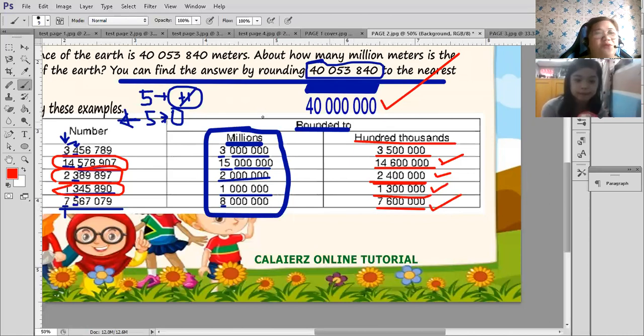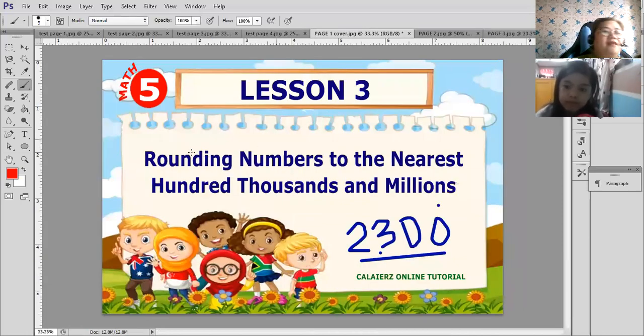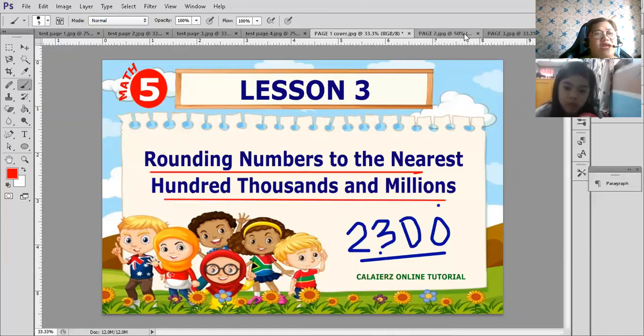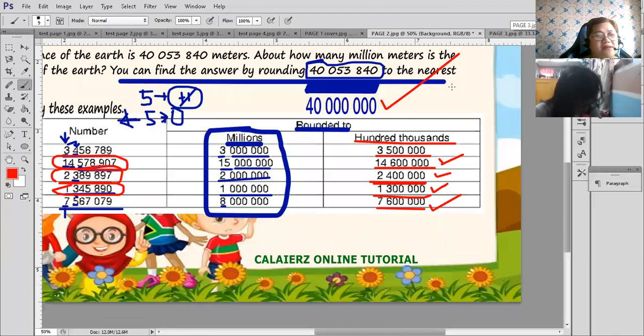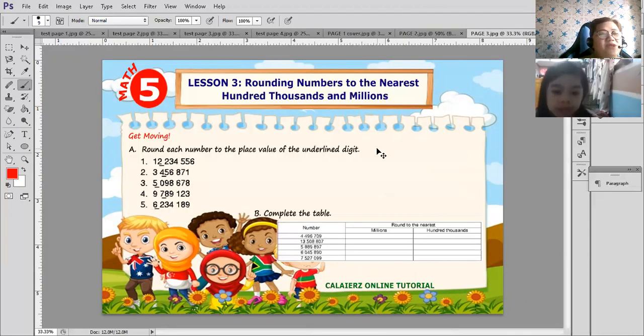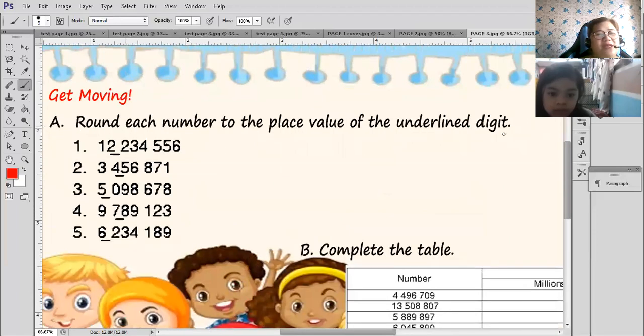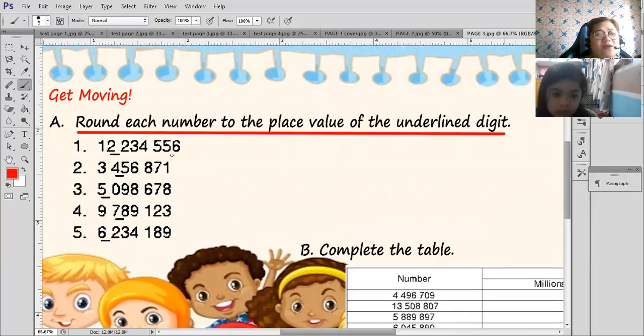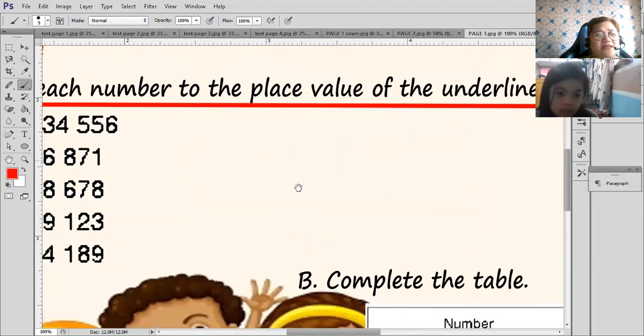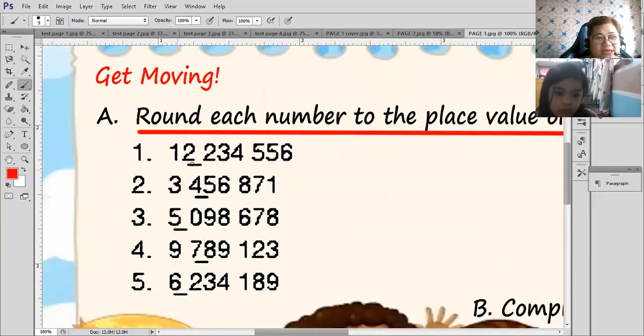So I think you understand this already, the rounding numbers to the nearest 100,000, millions, hundred thousands. So let's check your understanding after this discussion here. Now, let's try to round each number to the place value of underlying digit. So we follow the underlying digit here, Mary Grace. This one is actually millions, and then 100,000, and then millions, 100,000, and then millions. Okay, can you try it? Number one, what's your answer?